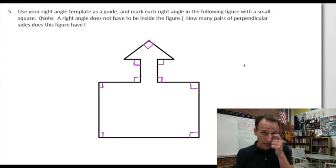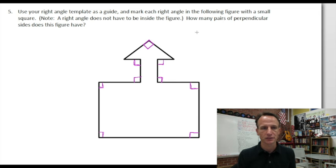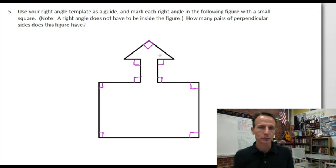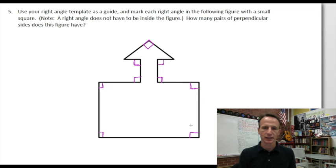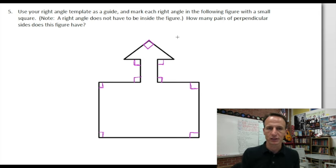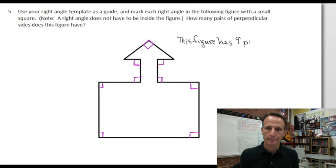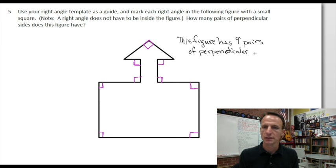Switching back to black to write how many — we did the first thing to mark them with the small square. How many pairs of perpendicular sides does this have? Basically, wherever you drew a square, that's a pair of perpendicular sides. So: one, two, three, four, five, six, seven, eight, nine. Or we could say four and four — eight plus one is nine. So this figure has nine pairs of perpendicular sides.